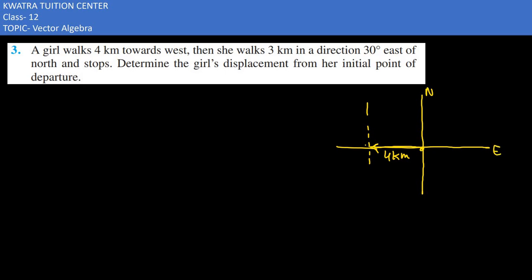This is north, and where is east of north? This is 3 km and this angle is 30 degrees. And this angle is 60 degrees.